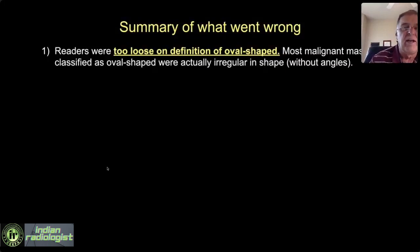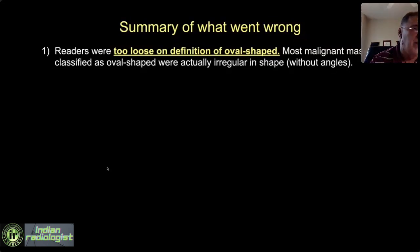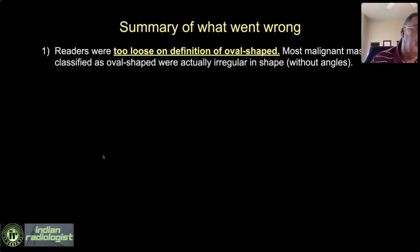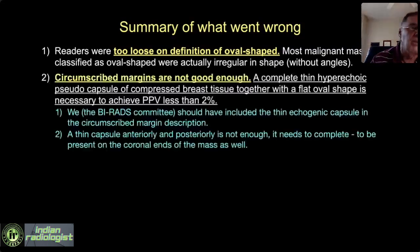The top three causes of false negatives: first, readers were too loose on the definition of oval shape. I looked at what readers were calling oval-shaped and said, how in the world can you call that oval? Oval-shaped should be oval-shaped — not approximately, not sort of. It has to really be oval-shaped.